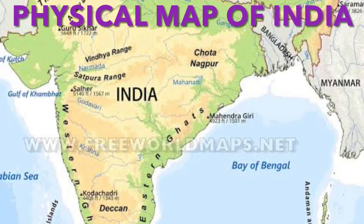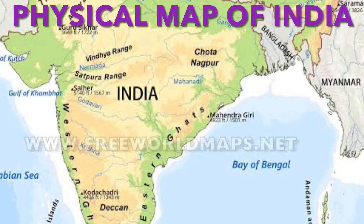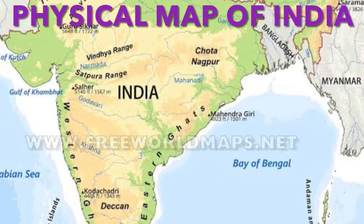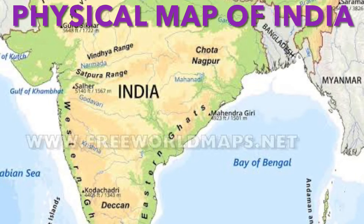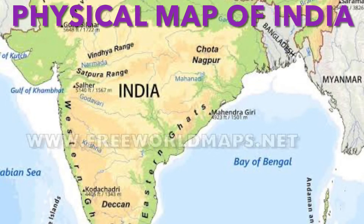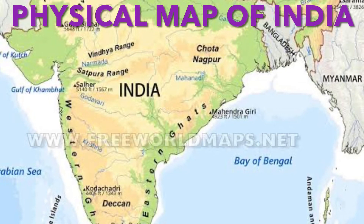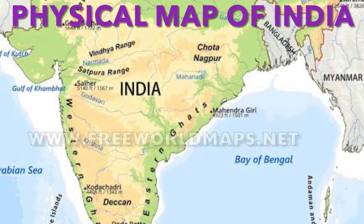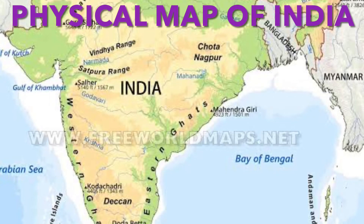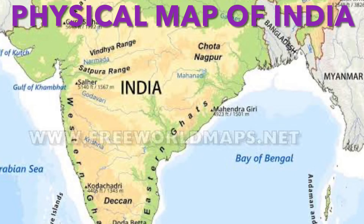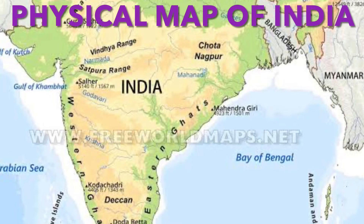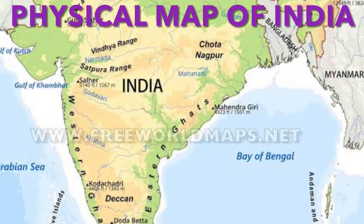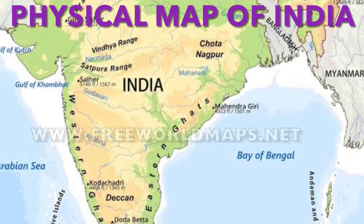Geological maps show geological structures, rocks and minerals. Climatic maps show the distribution of temperature, rainfall, clouds, etc. Soil maps show the distribution of different types of soil and their properties.